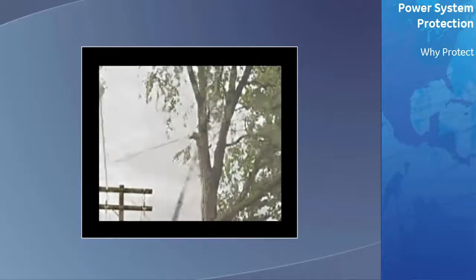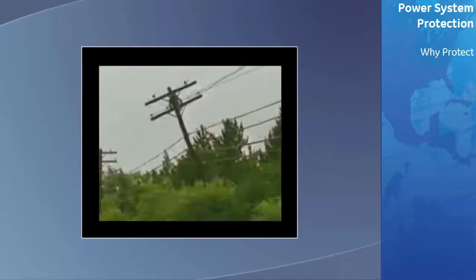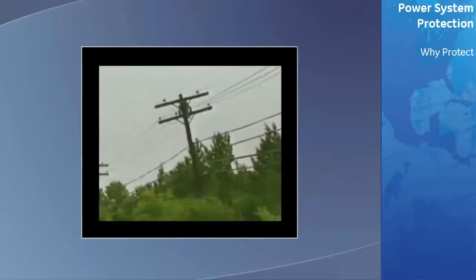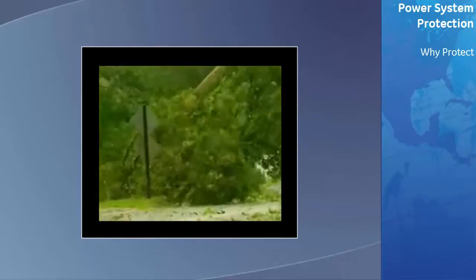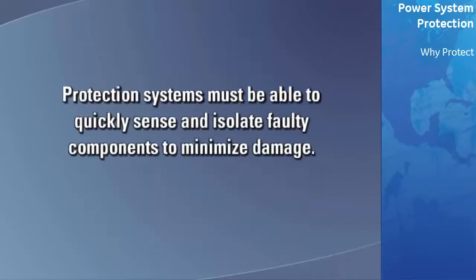Physical damage to a power system component such as the transmission line or towers are two examples of permanent faults. The protection system must be able to quickly sense and isolate the faulty components to minimize damage.